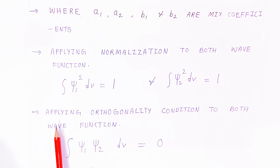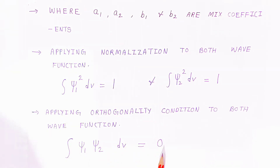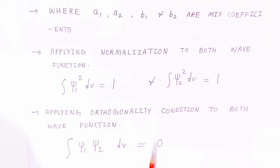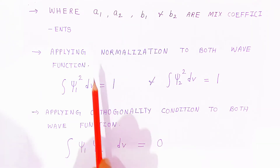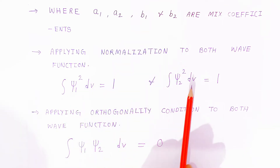When you apply the orthogonality condition to both wave functions together, the integration of Ψ₁ and Ψ₂ with respect to volume V always comes out to 0. For normalization, Ψ₁² and Ψ₂² both integrate to 1.